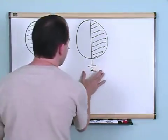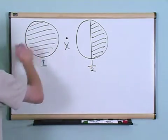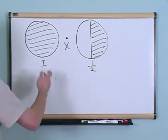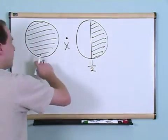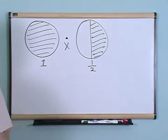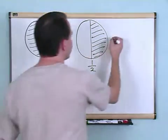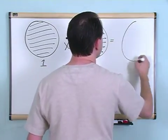So here I'm multiplying by a half. So in the end, all I want is half of this first pie. So if I start with a pie, and this is telling me I just want to end up with half of what I started with, then the final answer is just going to be one half.